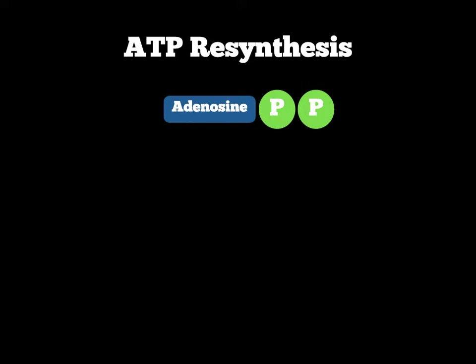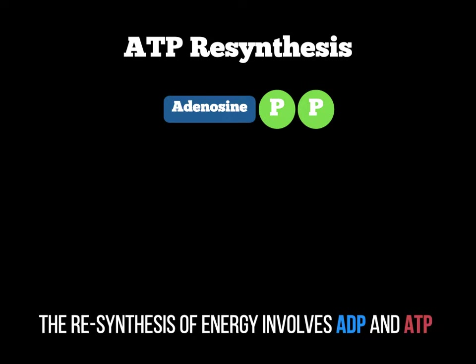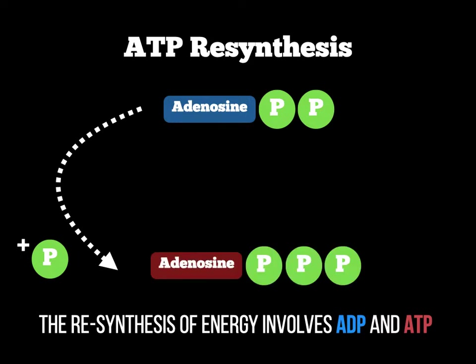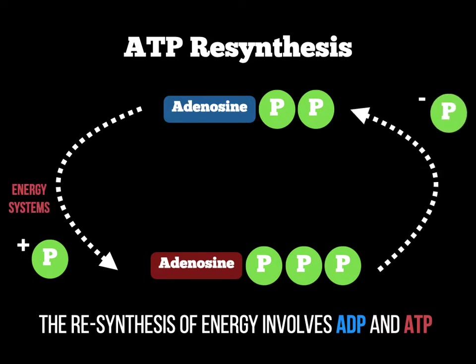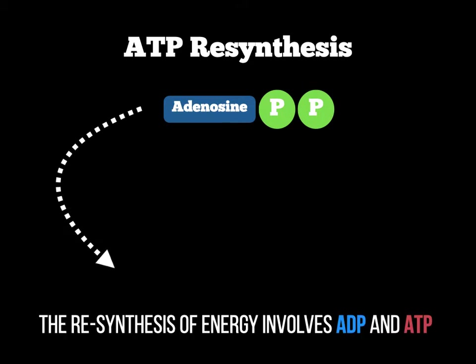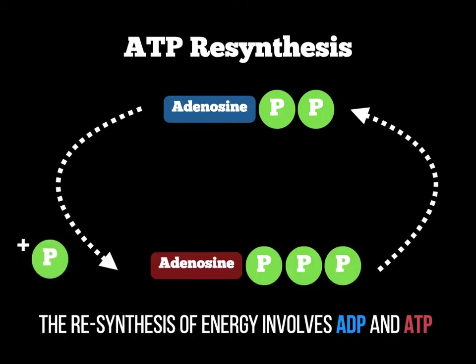Remember when the body has stores of ADP — adenosine diphosphate, so two phosphates — we need to resynthesise the phosphate in order to create the ATP compound so we have stored energy. We gain a phosphate in an endothermic reaction to create adenosine triphosphate, ATP. Then when we need to release energy to the muscle groups, we lose that phosphate in an exothermic reaction and this becomes adenosine diphosphate again.